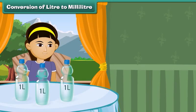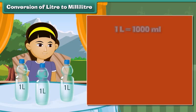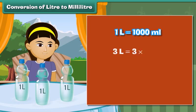Conversion of liters to milliliters: Sonam drinks 3 liters of water in a day. What is Sonam's water intake in milliliters? 1 liter is equal to 1000 milliliters. Therefore, 3 liters is equal to 3 into 1000 milliliters, which equals 3000 milliliters. So Sonam drinks 3000 milliliters of water in a day.